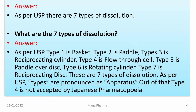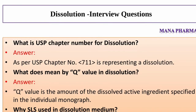As per USP, these types are referred to as apparatus. Out of these, type 4 is not accepted by the Japanese Pharmacopoeia. What is the USP chapter number for Dissolution? Answer: As per USP, chapter number 711 represents Dissolution.